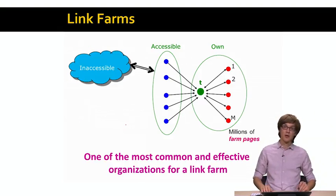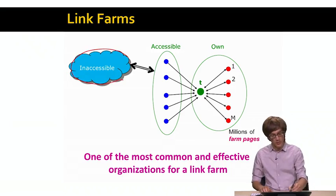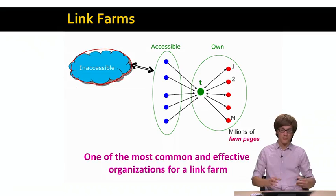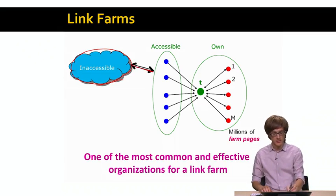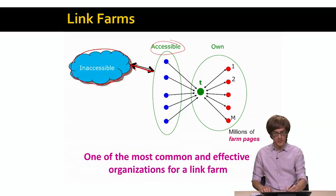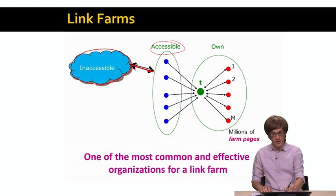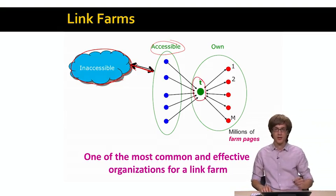One possible strategy for a link farm is created here. So basically, this is a topology of how a link farm may be organized. The blue cloud shows the inaccessible part of the web. Then, this inaccessible part of the web has in and out links to and from the accessible part of the web. What the web spammer can do, make this accessible part of the web. As I said before, these are kind of blog posts and things like that. They can create comments that link into the target web page T.